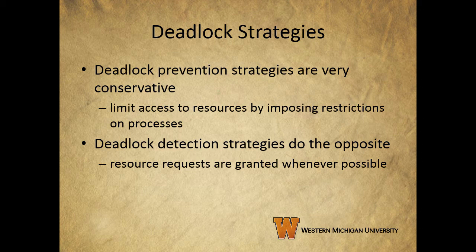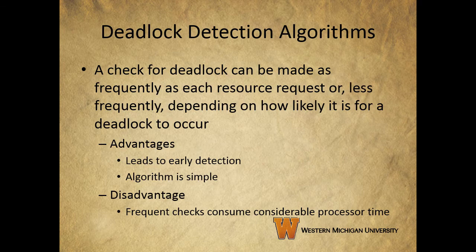Periodically, the operating system will perform an algorithm that allows it to detect the circular wait condition that we talked about in our first video. A check for deadlock can be made as frequently as each resource request, or less frequently, depending on how likely it is for a deadlock to occur.